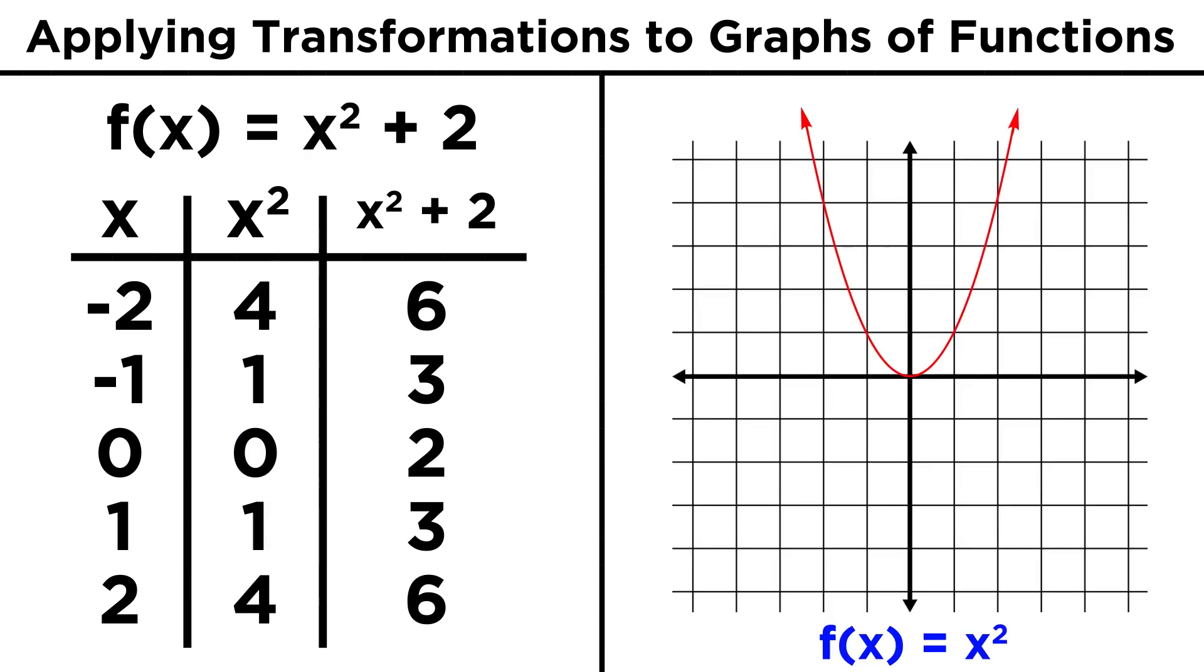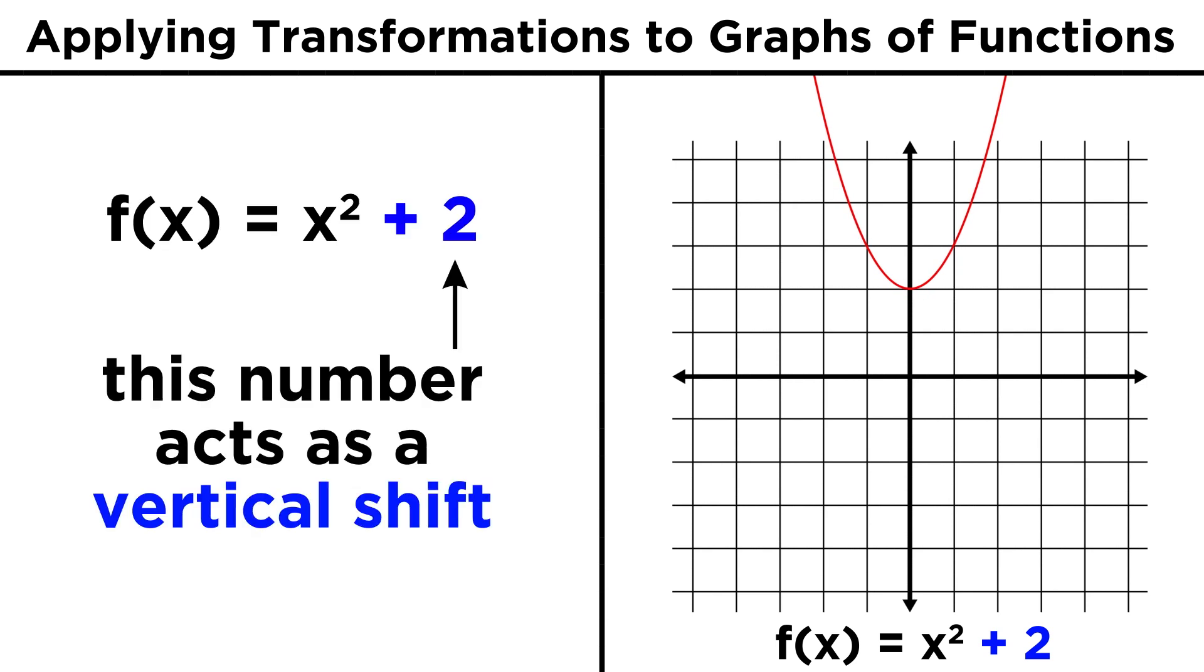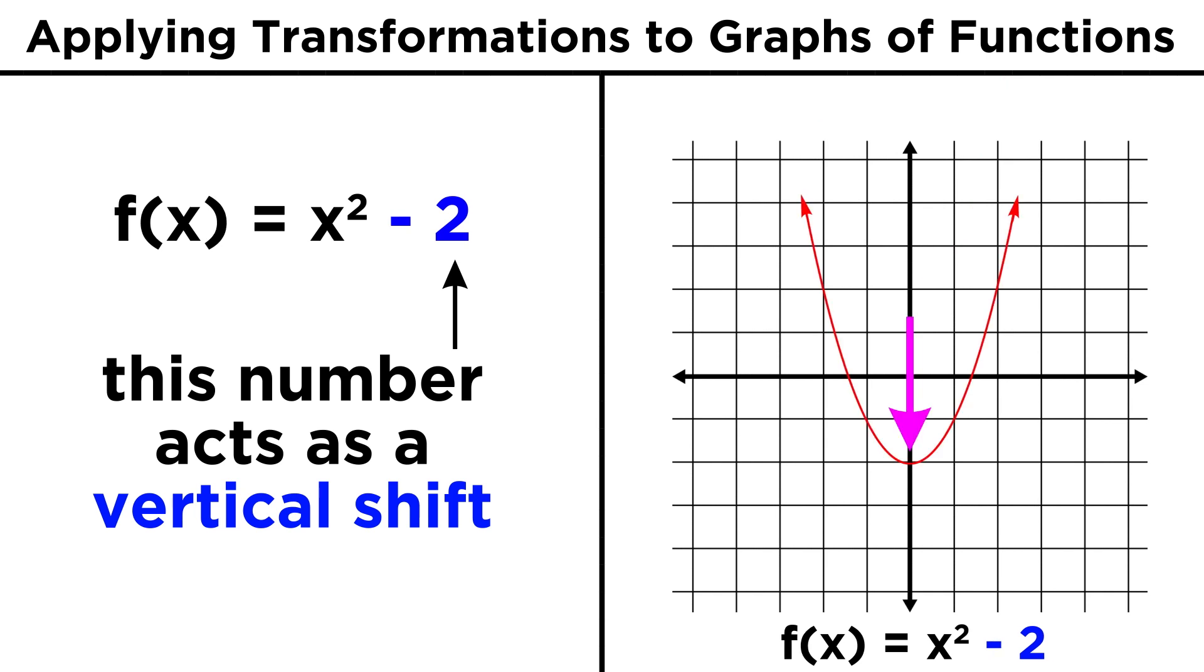If the function is two greater, then it sits two units higher on the graph, so when we add or subtract a number in this way, we are producing a vertical shift, which can be either positive, shifting up, or negative and shifting down.